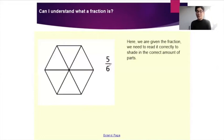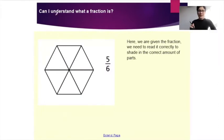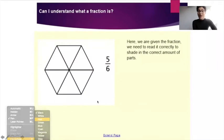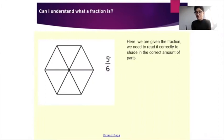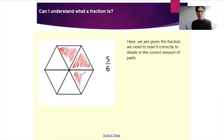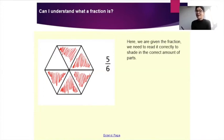Here we are given the fraction. Now we need to read it correctly to then shade in the correct amount of parts. So looking at this fraction — five out of six — show me how you would shade this in to show that fraction. Off you go. So if this was me, I would shade in five parts out of the six parts, because the numerator tells us that we have to shade in five. So now my drawing shows five out of six, because five out of the six parts have now been coloured in.